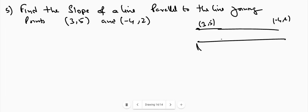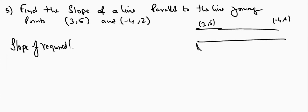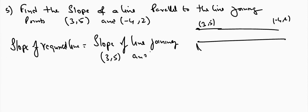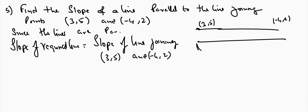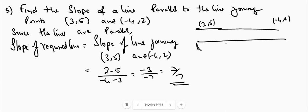If lines are parallel, then their slopes are equal. So slope of the required line equals slope of the line joining (3, 5) and (−4, 2), which is y2 minus y1 over x2 minus x1, equal to 2 minus 5 over −4 minus 3, which equals minus 3 over minus 7, giving 3 by 7. So 3 by 7 is the slope of the line parallel to the line joining (3, 5) and (−4, 2).